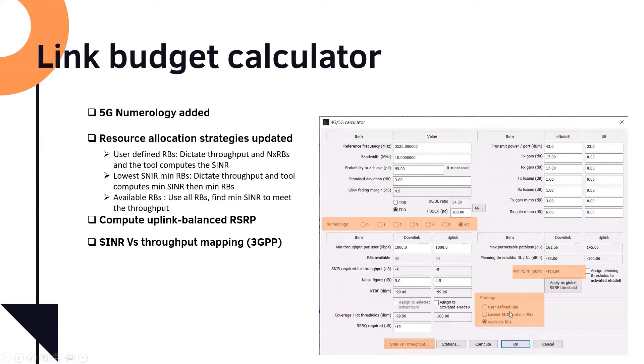And you also have these different strategies. So the strategies we have, user-defined RB, which means you are in charge. You dictate to the software how many resource blocks you are going to use. And then the software will translate your throughput that you need. So your input is throughput, number of RBs, and the software will work out for you what is the minimum signal-to-noise ratio you need in order to fulfill your requirements. And the signal-to-noise ratio is the one used in order to calculate the minimum RSRP you need in your planning. It does uplink, downlink, balancing, and so on.